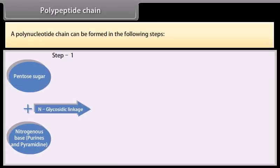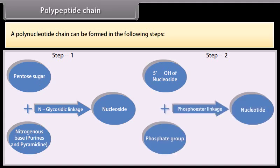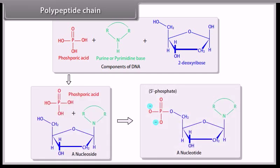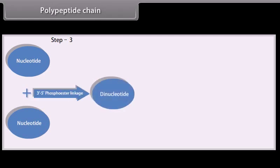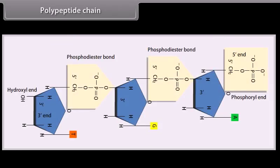A polynucleotide chain can be formed in the following steps. A polynucleotide chain has a phosphate moiety at one free end of ribose sugar. This is known as the 5' end of the polynucleotide chain. The other free end of ribose sugar has an attached OH group. This is called the 3' end of the polynucleotide chain.